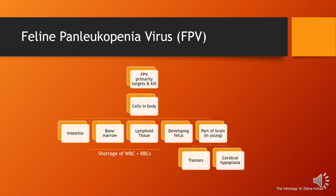Because FPV easily affects the developing fetus, infection in early stages can lead to abortion. In later stages, if the kitten is born following in utero infection, it can ultimately cause tremors and cerebellar hypoplasia. The key lesion in young kittens is a small-sized cerebellum.